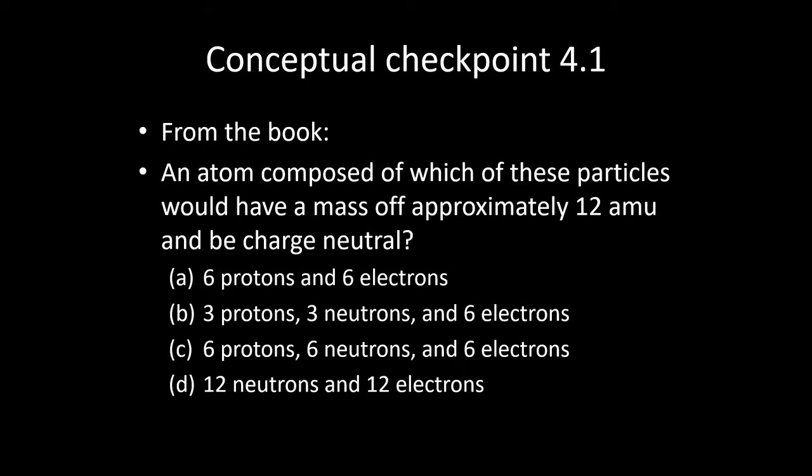Okay. I hope you gave that a shot. If we look at the possibilities here, the first option, we have six protons and six electrons. That would give us a neutral charge, because we have six positive, six negative. But remember that only protons and neutrons have mass on the order of an AMU. So this would only have a mass of six AMU.